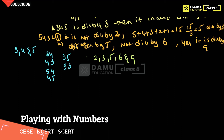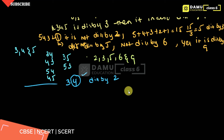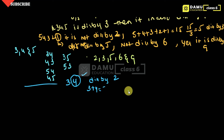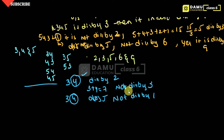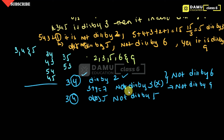Let's check 34. Units digit is 4, so it is divisible by 2. Sum of digits: 3+4=7, which is not divisible by 3. Units digit is 4, not 0 or 5, so not divisible by 5. It is divisible by 2 but not by 3, so not divisible by 6. Since it is not divisible by 3, it is also not divisible by 9.